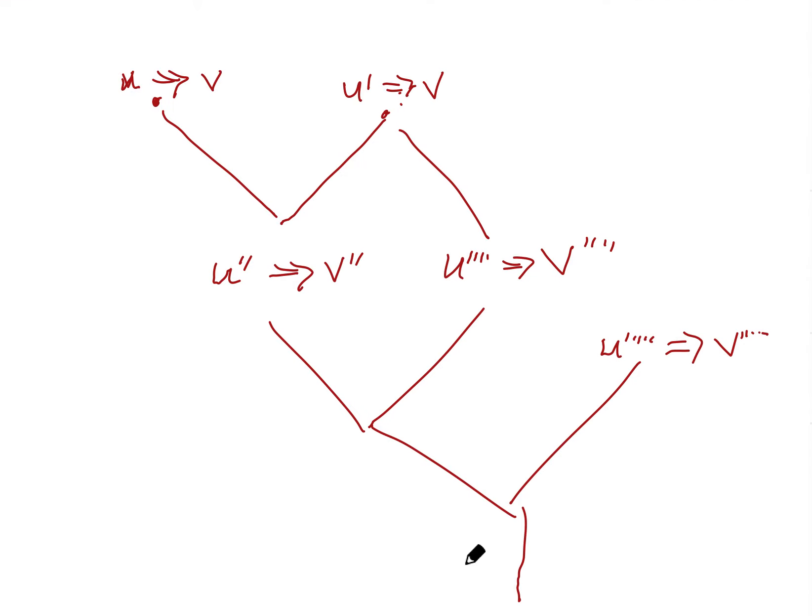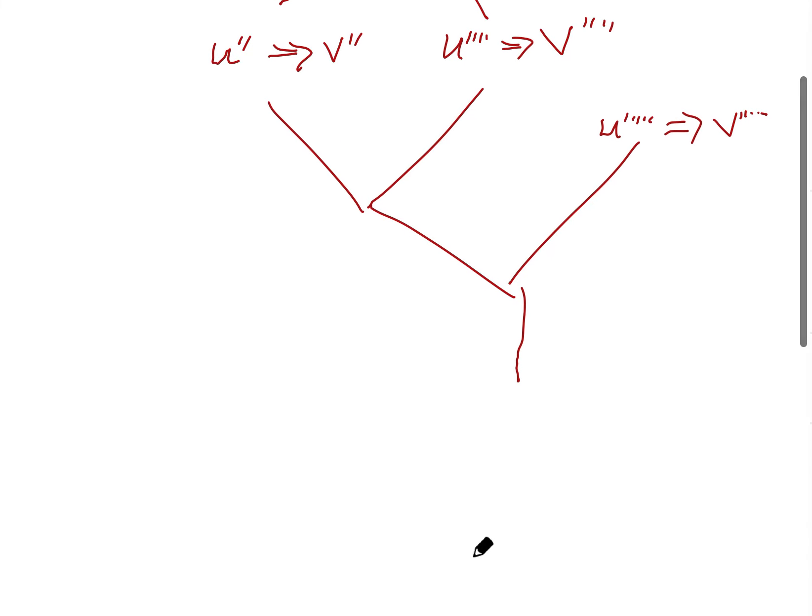We say the conclusion of the deduction tree is a sequent that labels the root of the tree. So if we go back here, in this tree, this is a root. It's the thing that we eat. So this is a root, and this is what we call the conclusion of the tree.